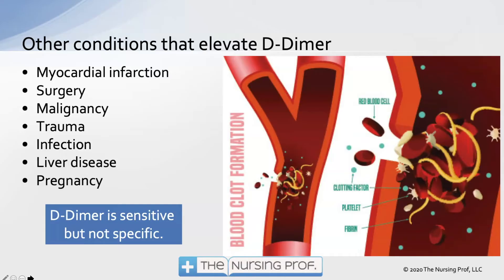Conditions that can elevate D-Dimer other than simply having a clot from trauma include myocardial infarction, surgery, malignancy, trauma, infections, liver disease, and pregnancy. So there are a lot of different conditions that can cause D-Dimer to elevate. In other words, D-Dimer is not specific to a particular condition.